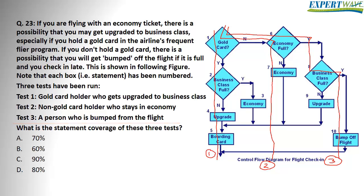So as you can see, test case one goes through steps one, two, four, and five. Test case two goes through statements one, six, and seven. Test case three goes through statements one, six, eight, and ten. If we count how many statements we have gone through, the question is asking how much statement coverage has been achieved during those three test cases. As you can see, the graph has already numbered the statements for us. We have a total of ten statements.